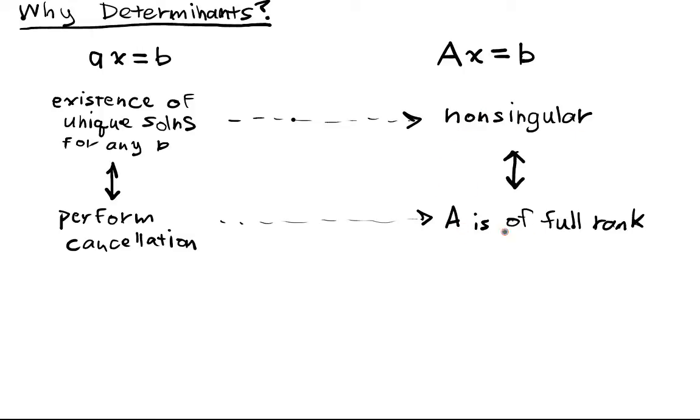Well, we know exactly when we can perform cancellation—it's when a inverse exists. In this last section, we talked about exactly what this is in matrix world. So this is A is invertible.